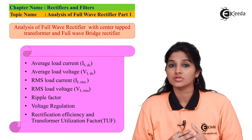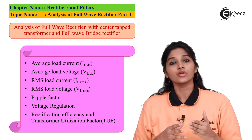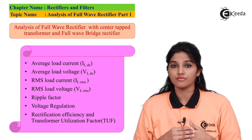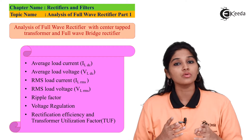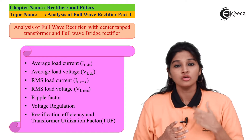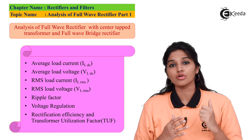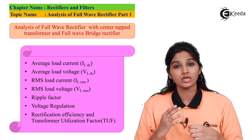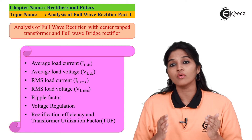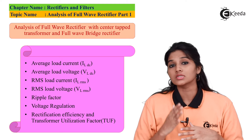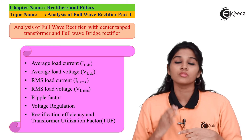The next parameter is ILRMS, that is RMS load current. Considering the output current waveform of the full wave rectifier, where we get output in both half cycles, and considering the same interval from 0 to pi, the value of ILRMS equals IM divided by square root of 2, where IM is the peak current. IM equals VM divided by (RS + RF + RL) for the center tap transformer rectifier. For a bridge rectifier, IM becomes VM divided by (RS + 2RF + RL).